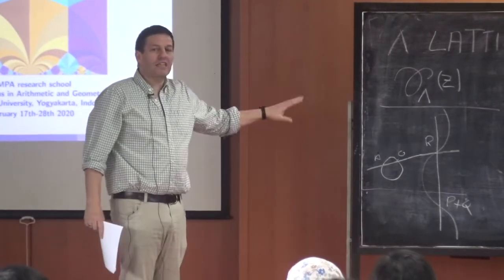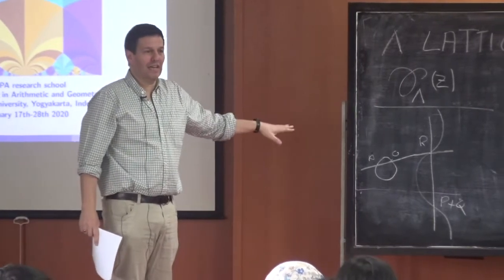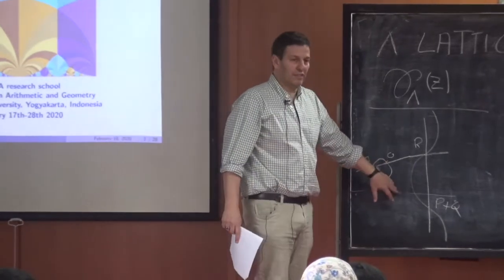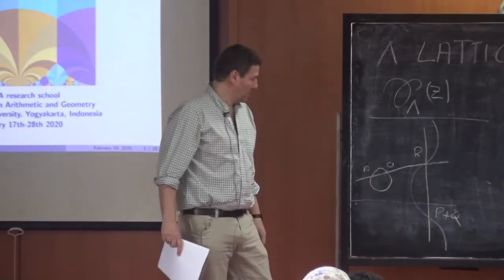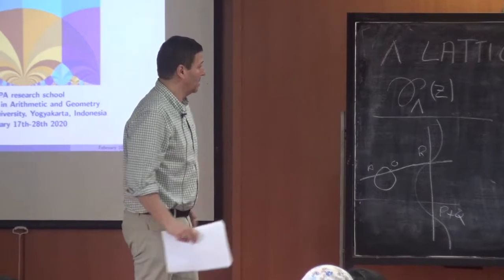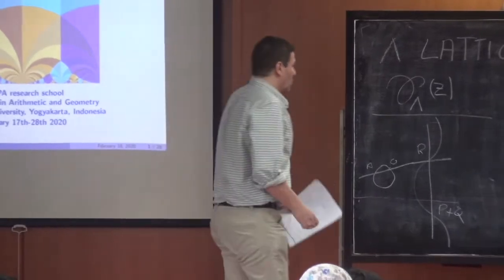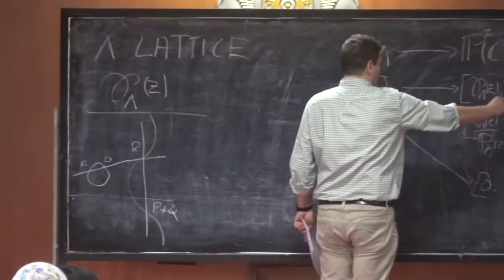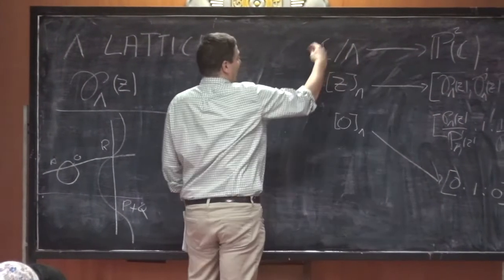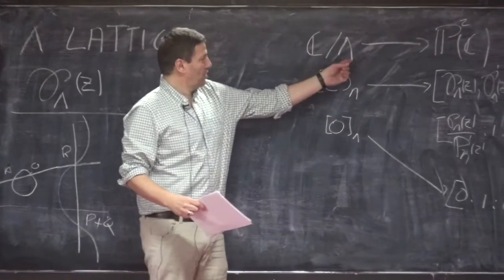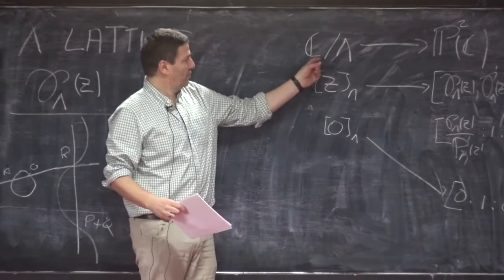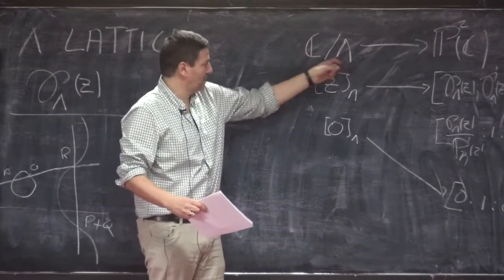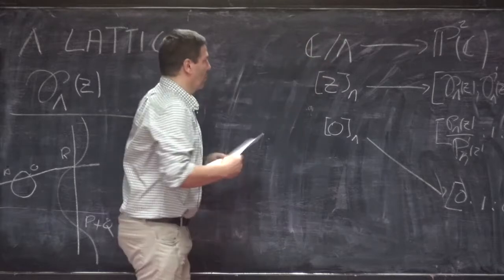It's not easy to show that this is really an addition law — the difficult part is associativity of the sum, but it is. On the image side we have a group law, and here we also have a group law because C modulo Λ: C is a group, this is a subgroup, so the quotient is also a group.